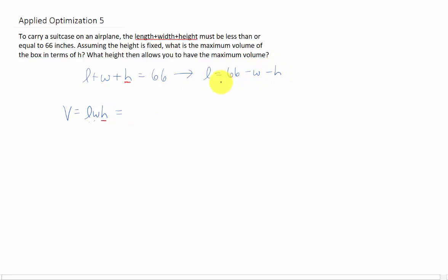What we can then do is plug that l into our volume formula to get the following. Now it still looks like it has two variables, but keep in mind again that h is a constant.